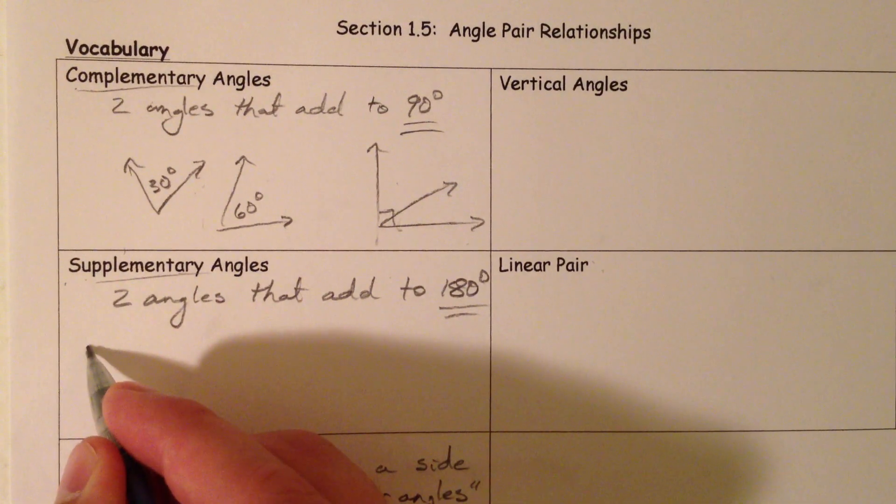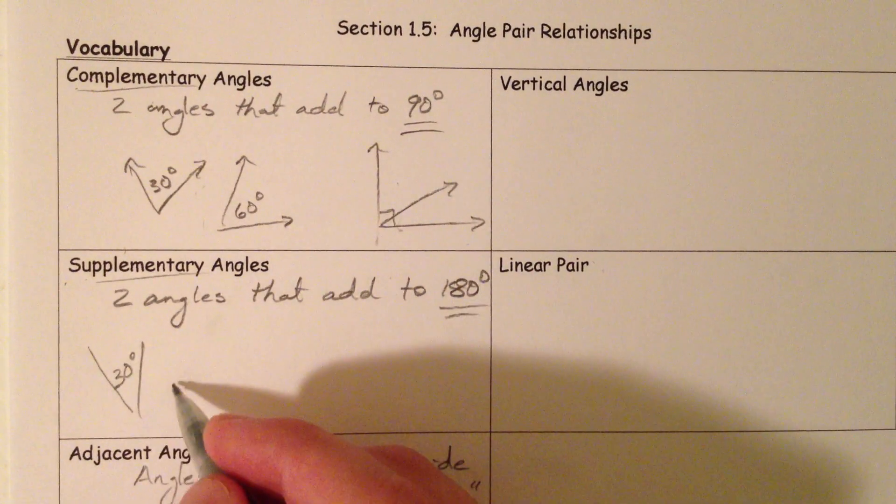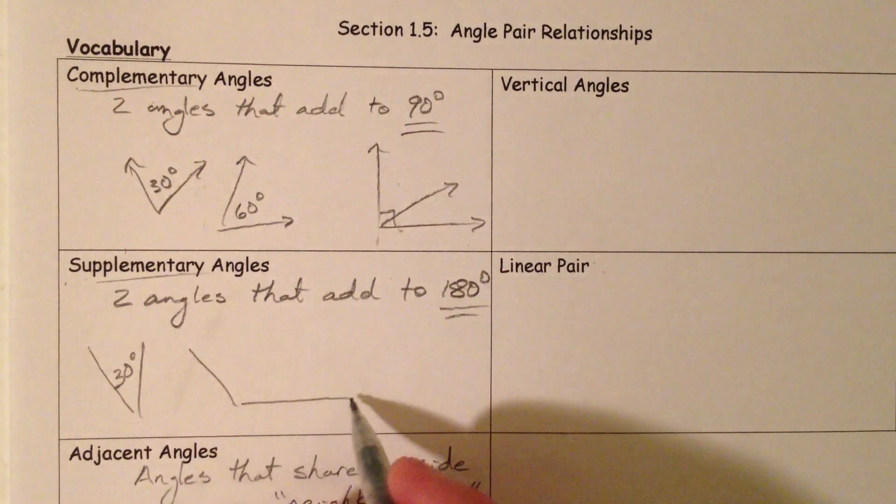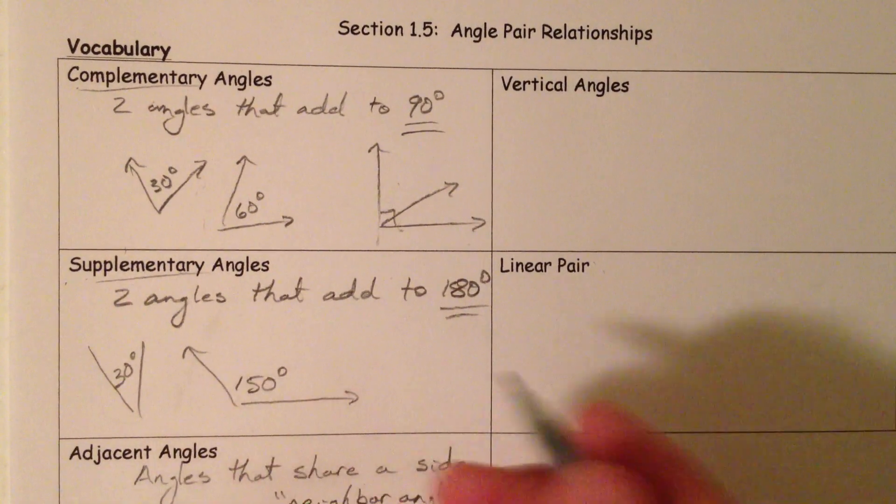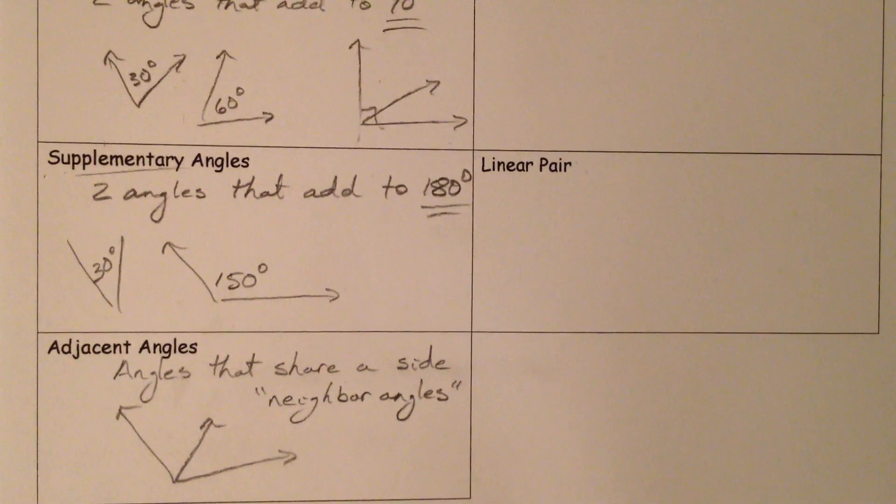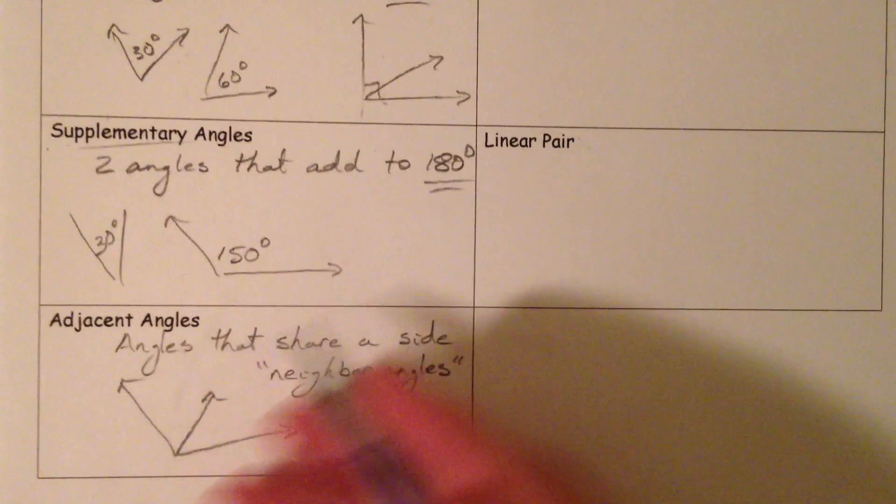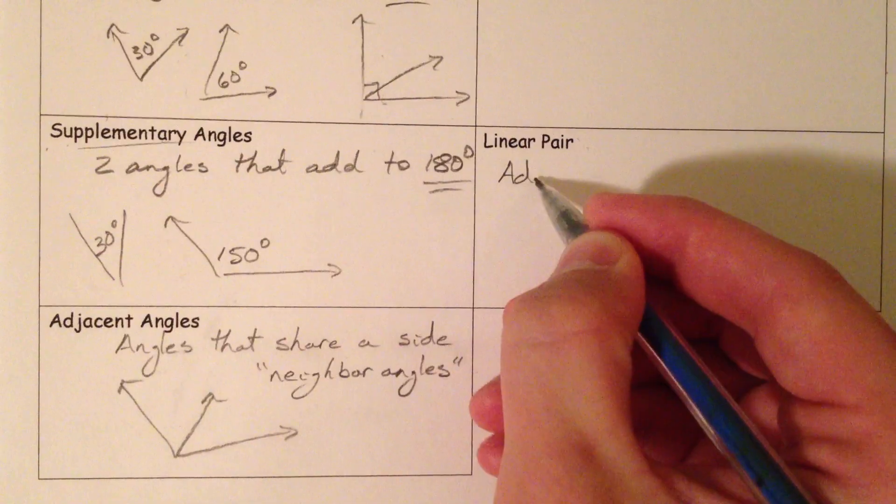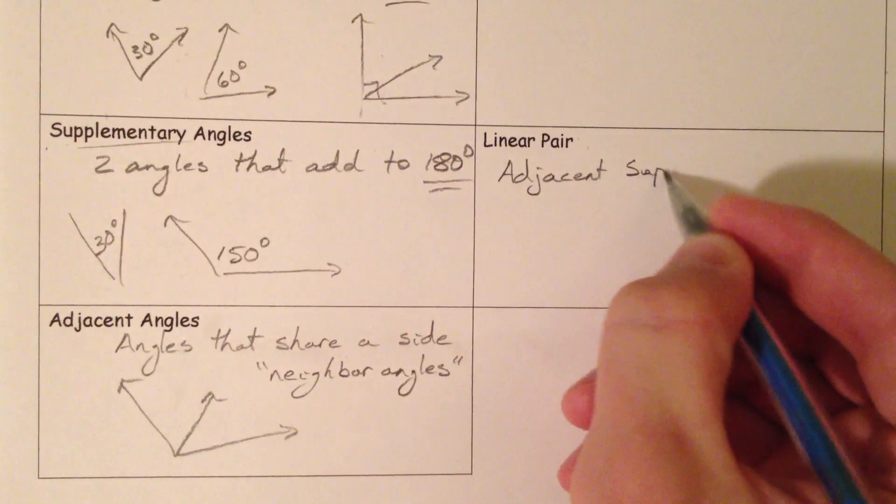So maybe an example could be you have a 30 degree angle and a 150 degree angle. Because 30 and 150 add up to 180, those two are supplementary angles. Now, a special kind of supplementary angles, actually adjacent supplementary angles, is what a linear pair is, adjacent supplementary angles.